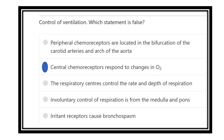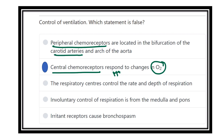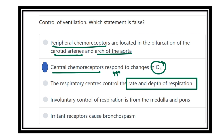Regarding ventilation, which assessment is false? The statement that the central chemoreceptor is responsive to oxygen is not true, because the central chemoreceptor is responsive to hydrogen ion concentration, not to partial pressure of oxygen or oxygen content. The option that peripheral chemoreceptors are located at the bifurcation of the carotid artery and aortic arch is true. The respiratory center controlling rate and depth of respiration is also true.